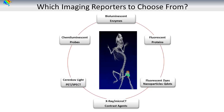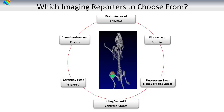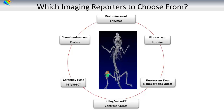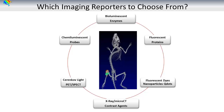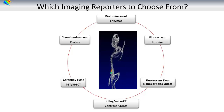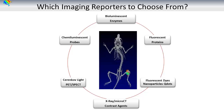Which imaging reporter to choose from? In this slide deck, we emphasize the pillars of success for optical imaging. When evaluating optical imaging reporters, there are many to choose from, such as bioluminescent enzymes, fluorescent proteins, fluorescent dyes, nanoparticles and quantum dots, chemoluminescent probes, as well as certain PET and SPECT probes that emit Cherenkov light. Here you can see an example of a 3D tomographic reconstruction of a mouse with a firefly luciferase-tagged tumor in the knee, pseudo-colored in green, co-targeted with a fluorescent 2-deoxyglucose pseudo-colored in red, and co-registered with a micro-CT image for anatomical reference.